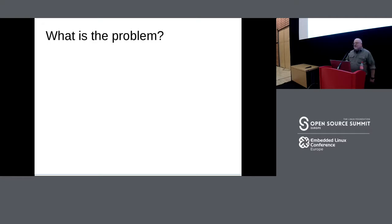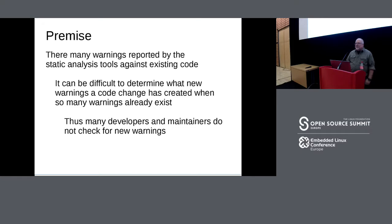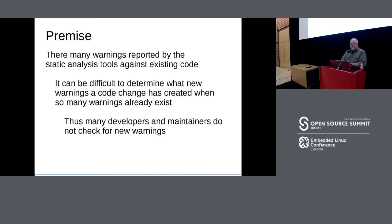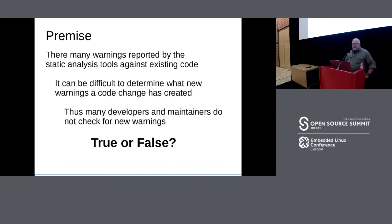So what is the problem that led to this talk? I have a premise with three parts. First, there are many warnings reported by the existing static analysis tools against the code that's already in the kernel. Second, it can be difficult to determine when you get new warnings when you add a change to the code, because there are so many warnings already. Third, because of that, there are many developers and maintainers who don't even bother to check to see if there are new warnings when they receive a new submission of code. Let's break that apart and see if this is true or false.